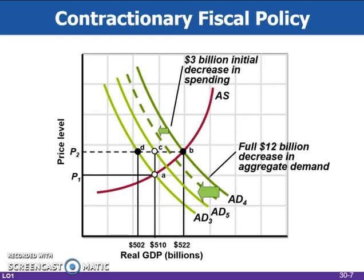An increase in aggregate demand from AD3 to AD4 has driven the economy to point B and ratcheted up the price level to P2, where it becomes inflexible downward. If the economy's marginal propensity to consume is 0.75, then the multiplier is 4. The government can either reduce its spending by $3 billion or increase its taxes by $4 billion, which would have the same effect of a $3 billion decrease in consumption, to eliminate the inflationary gap of $12 billion. Aggregate demand will shift leftward from AD4 to AD5, with the price level remaining at P2. The economy will move from point B to point C, and the inflationary GDP gap will disappear.